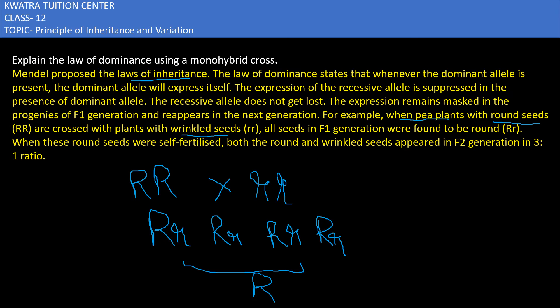The recessive allele is not lost — it is just that when the dominant allele is present, the recessive allele's effect is suppressed. The recessive trait will not appear in the F1 generation, but it will re-emerge in the F2 generation.